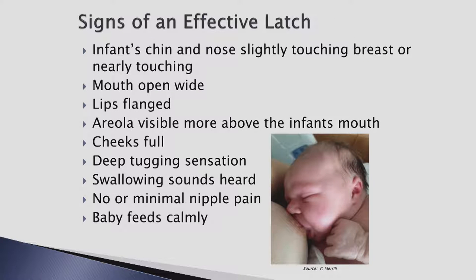A good latch is key for effective breast stimulation and maintenance of a good milk supply. When the infant is latched well, the chin touches the breast with the nose slightly near the breast. The mouth is open wide like a yawn with the upper and lower lips flanged — lips should not be tucked in or a smacking sound heard. If the areola is large, more should be seen at the top of the breast with the lower lip covering the bottom edges of the areola. The cheeks should be full and round. The mother should feel a deep tugging sensation at the breast, not a pinching at the nipple. Swallowing should be heard with minimal nipple discomfort. Babies should be nursing calmly with long, deep draws at the breast. Fast and frequent suckling with pulling on and off the breast are signs of a shallow latch.